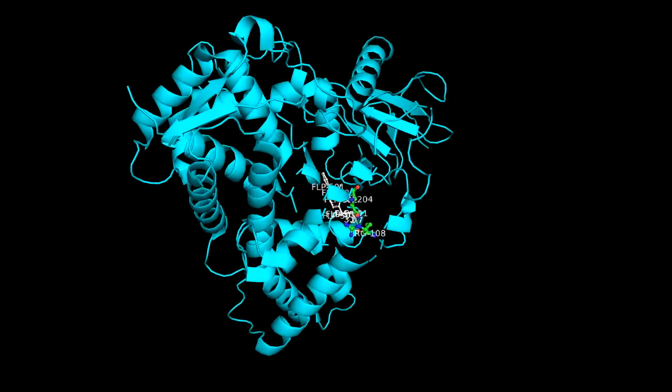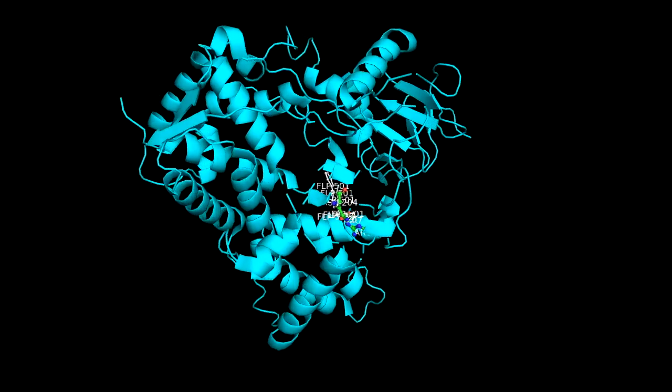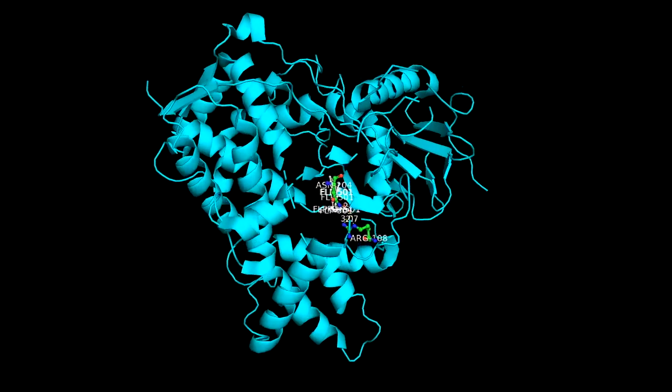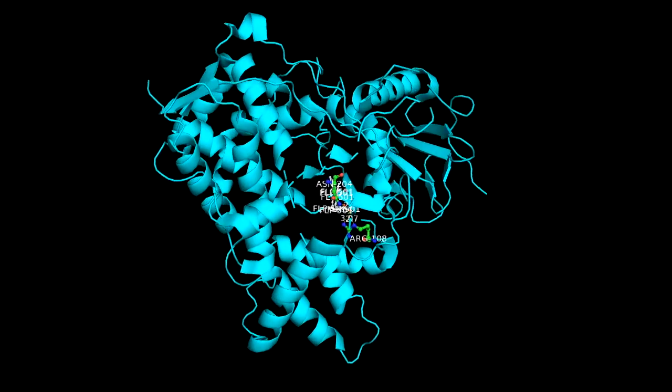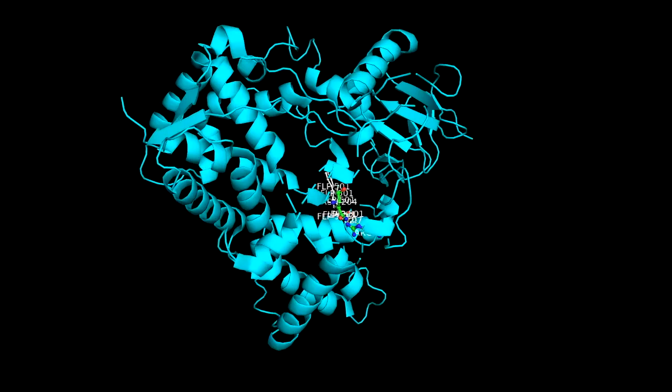It is mainly composed of alpha helices and loops while it also has beta sheets to a lesser extent. The structure is composed of one A chain having a total of 477 amino acid residues.